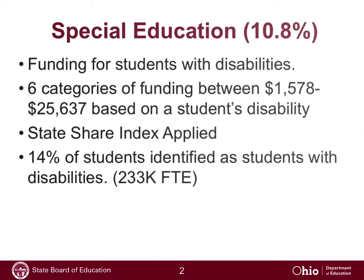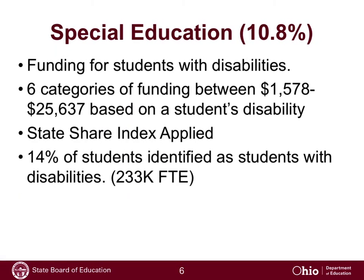The next important piece is special education, which is about 11% of the formula — funding for students with disabilities. We divide students with disabilities into six categories based on the severity of their disabling condition. There are six dollar amounts corresponding to each category, the lowest being about $1,600 per student and the highest being over $25,000 per student. The number of students in each category is multiplied by their respective dollar amounts, the state share index is applied, and that generates the amount for special education. Currently, about 14% of students statewide are identified as students with disabilities.